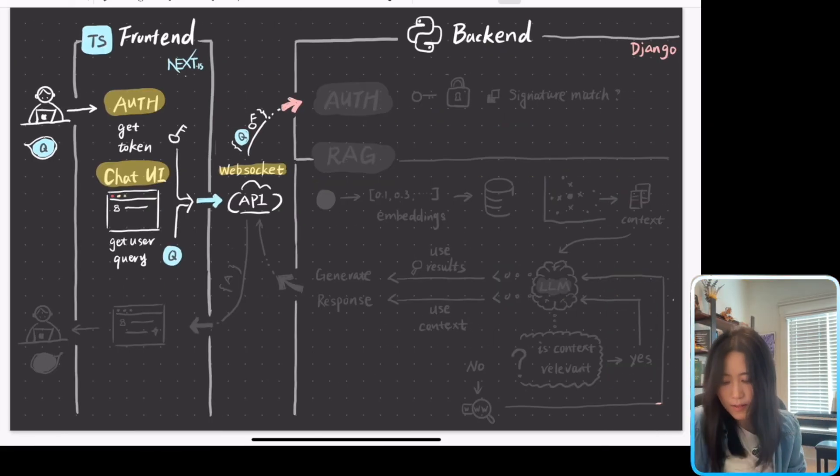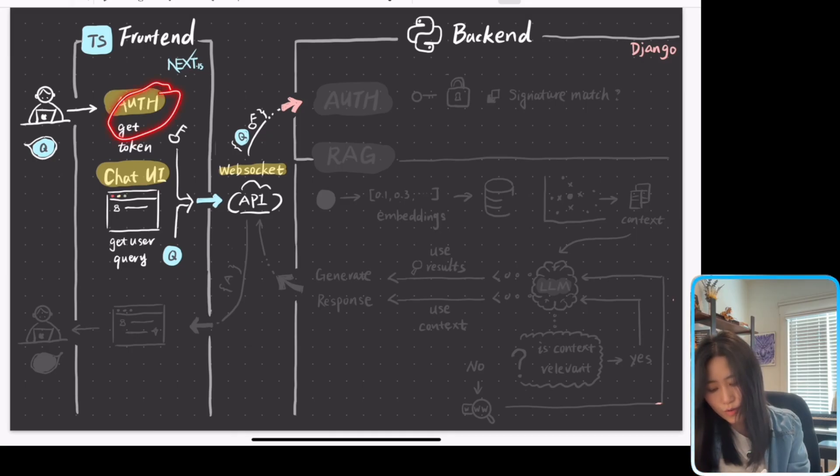Let's look at the frontend in-depth. When a user sends a query in, the frontend is going to get the user token and the chat AI component is going to get the user query, and both the token and the query is going to be passed to backend using WebSocket API.